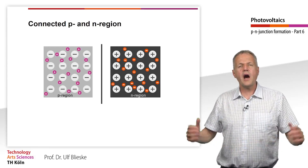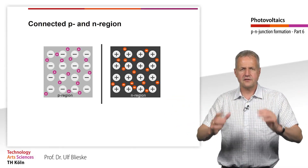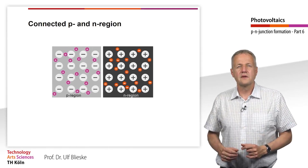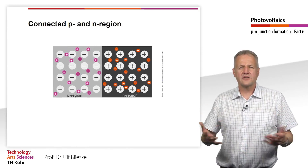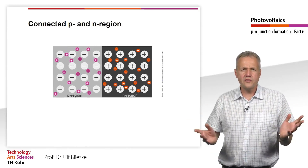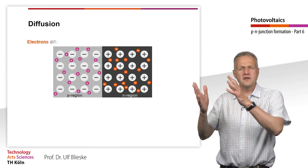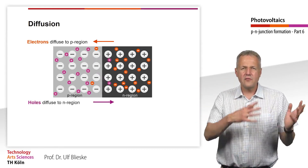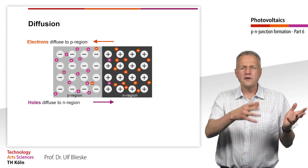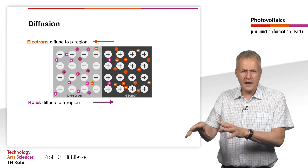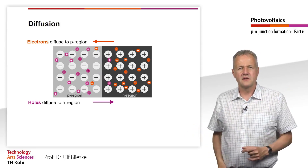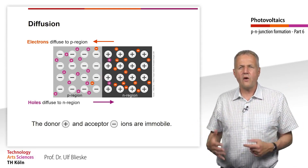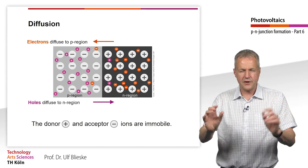We are now bringing the two areas together. Since the electrons are free to move, they will diffuse into the neighboring P region. In the same way, the holes now diffuse into the neighboring N region. The core atoms of the dopants, however, remain stationary.